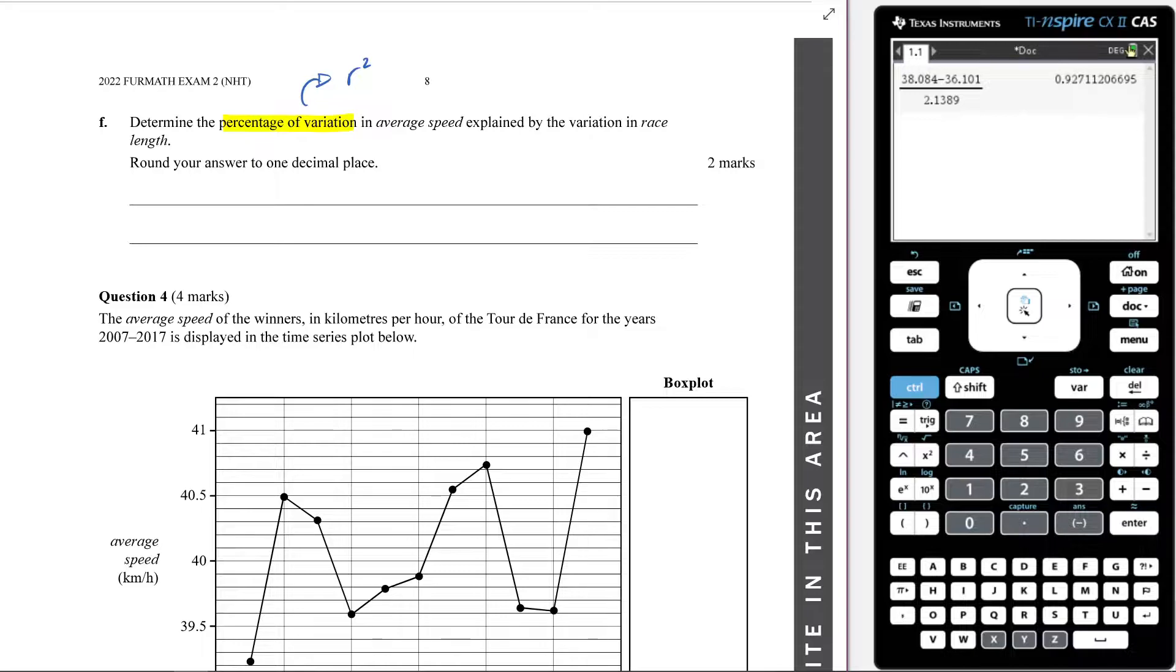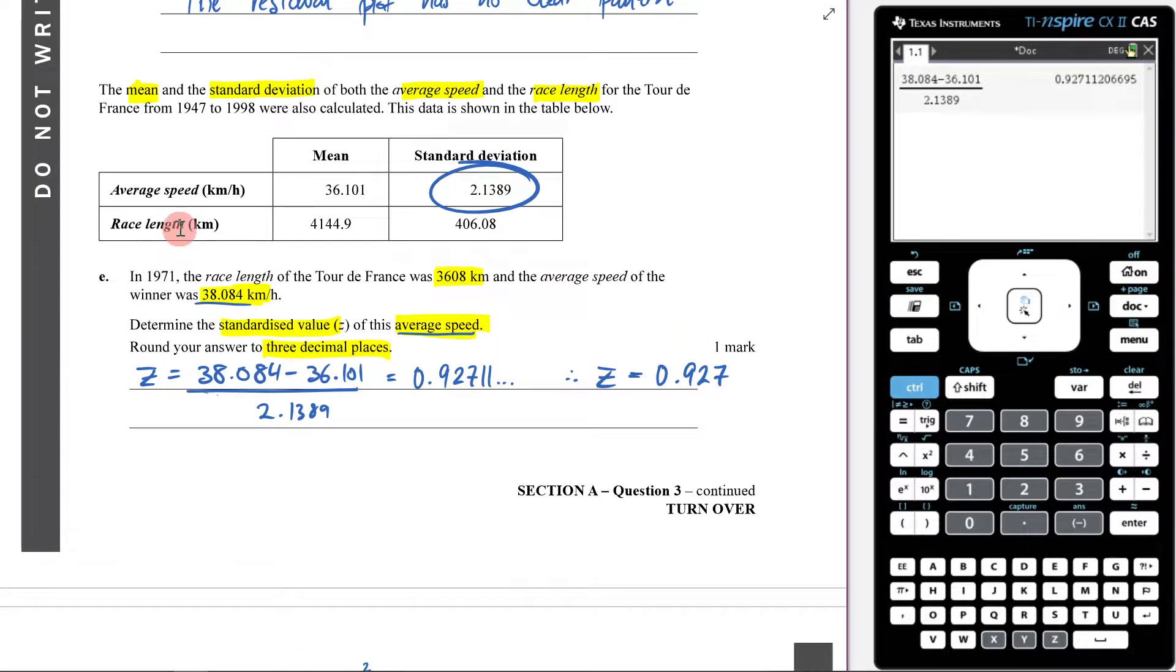Now the issue is, to figure out the r squared value, we either have to be told it, or we need to be told what the r value is and then we can square it. But we haven't been told any of that information. Rather, what have we been told? We've been told the mean of the average speed and the standard deviation of the average speed, and so too for the race length.